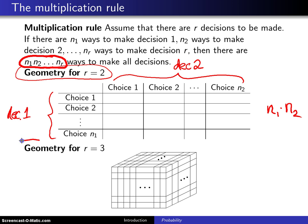If we move from r equals 2 up to r equals 3, now if we once again let the rows represent the n1 different ways of making a decision, and the columns represent the n2 different ways of making decision 2.